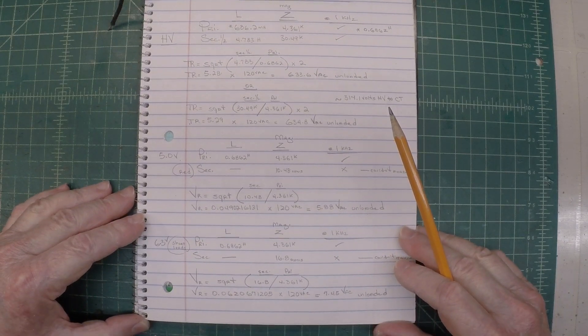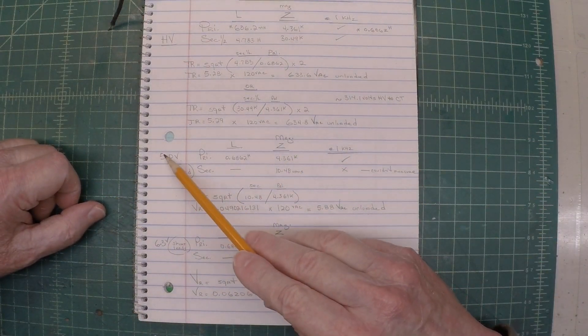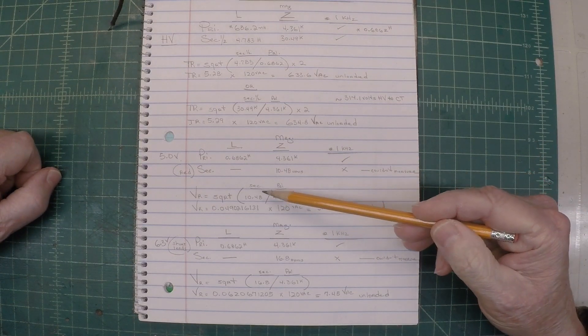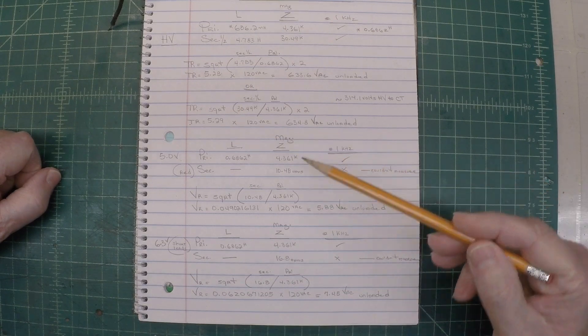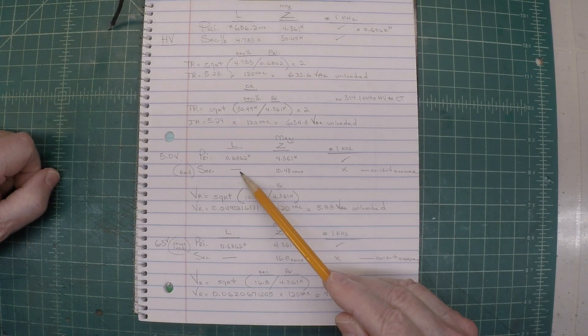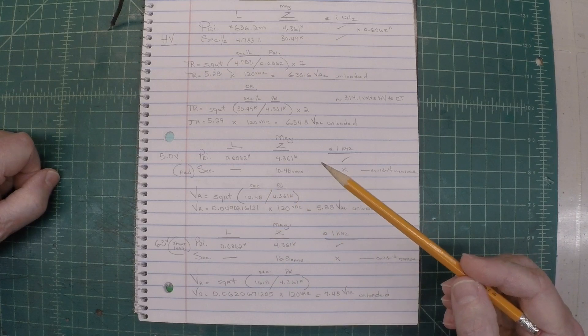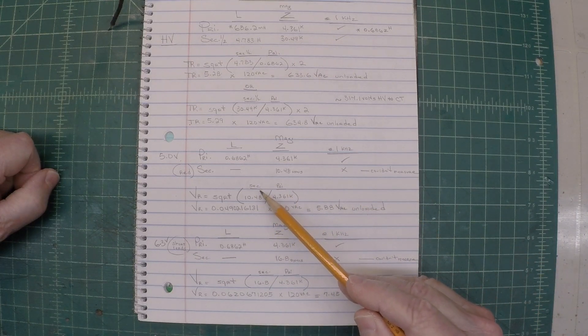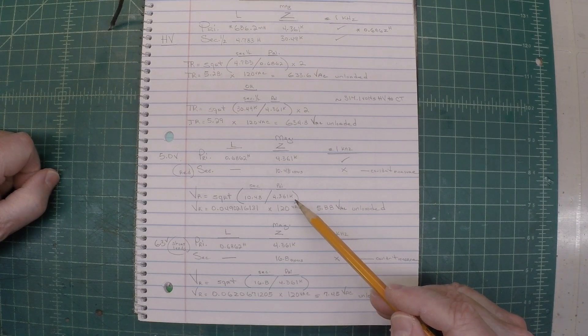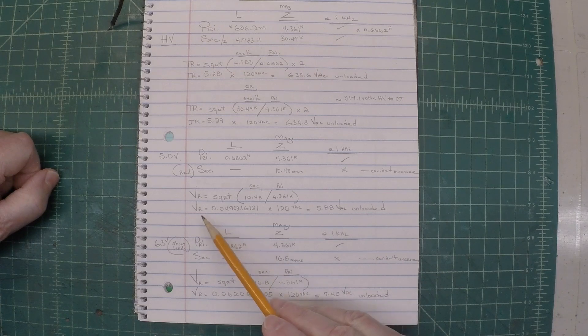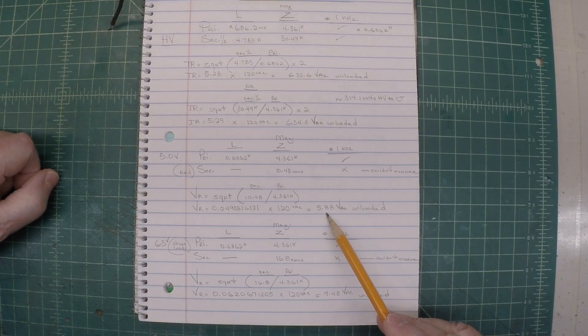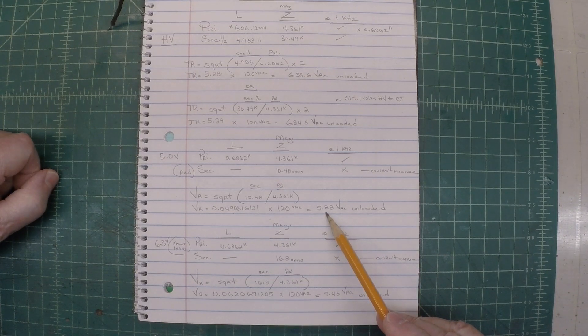But we can repeat the math here for the 5 volt winding. You can see here if I just focus on the magnitude Z, because I could not get a measurement here on inductance at 1 kilohertz. I wanted to stay consistent at 1 kilohertz. If I take the secondary impedance of 10.48 divided by the 4361 ohms, we get a voltage ratio of this number times 120. And you can see we can back into the 5 volt string at 5.88 volts unloaded.